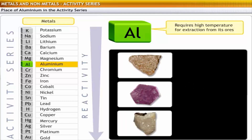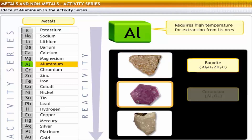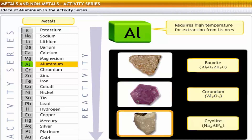The important ores of aluminium are bauxite, represented by the formula Al₂O₃·2H₂O; corundum, represented by the formula Al₂O₃; and cryolite, with the formula Na₃AlF₆.